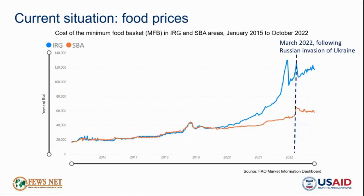Turning to food prices, which are very important to food security in Yemen as most poor households — even in rural areas — depend on markets for a notable share of their food. We're looking at the cost of the minimum food basket in IRG and SBA areas from January 2015 to October 2022. Food prices have been increasing year on year in both IRG and SBA areas, with IRG areas worst affected due to the depreciation of the currency. In March 2022, indicated with the vertical line, prices increased sharply following the Russian invasion of Ukraine as market actors responded to concerns about the future food supply. Yemen was particularly hard hit because more than 90% of the country's staple wheat supply is typically imported, and imports from Ukraine and Russia together previously supplied 42% of Yemen's annual domestic wheat requirements.